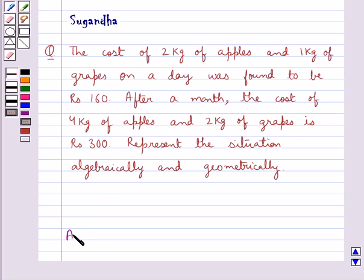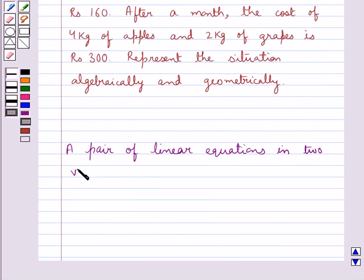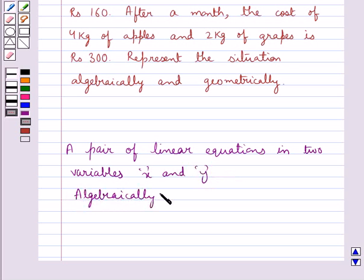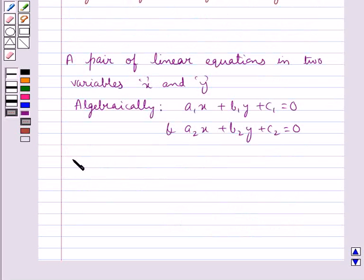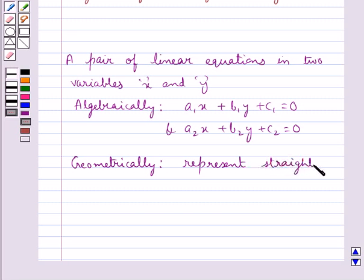We know that a pair of linear equations in two variables, x and y, can be represented algebraically as a1x plus b1y plus c1 equal to 0, and a2x plus b2y plus c2 equal to 0. And geometrically, they represent straight lines. This is the key idea to be used for this question. Let's move on to the solution.